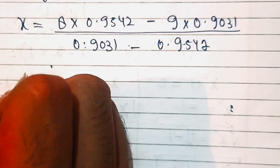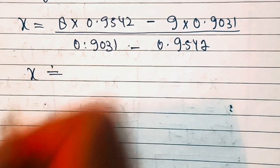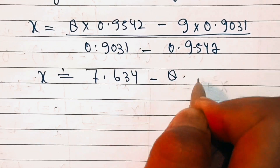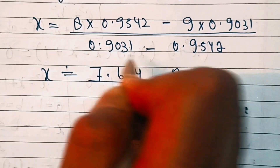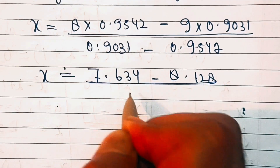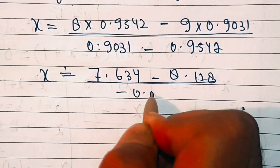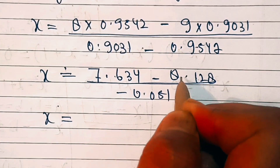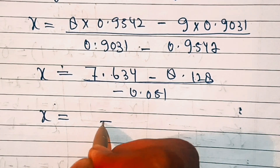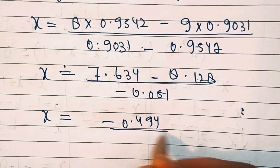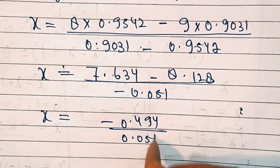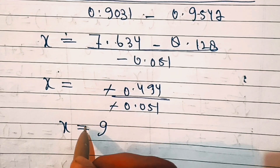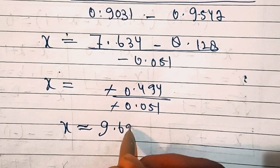This implies that x is equal to 7.634 minus 8.128 divided by minus 0.051. Separating these two, we get minus 0.494 over minus 0.051. The two negatives cancel out, so we have x approximately equal to 9.69.